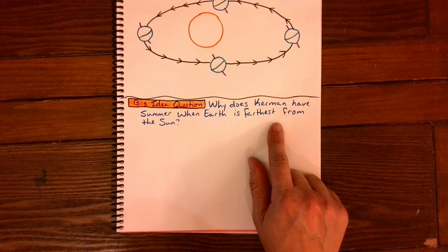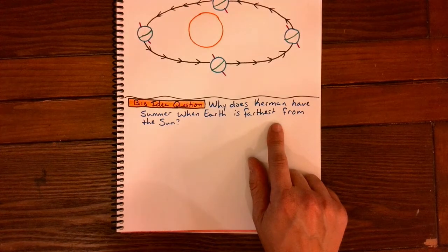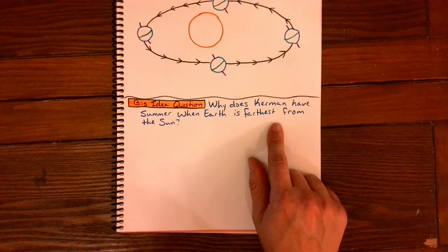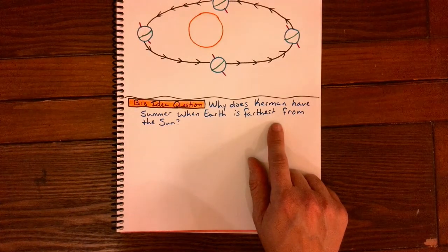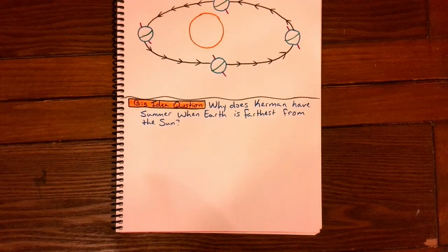So my question here is why is it that we have summer here in Kerman when the Earth is the farthest from the Sun that it's going to get on its orbit? Please pause the video and get your big idea questions set up on the bottom of page 29.